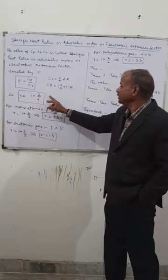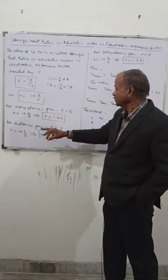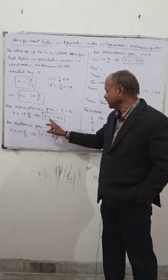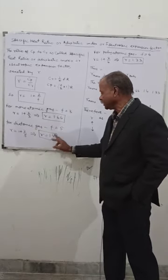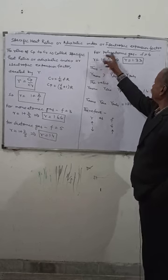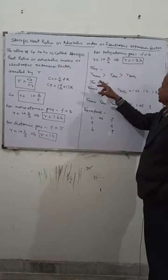Gamma equals Cp upon Cv, so gamma equals 1 plus 2 upon F. For monatomic gas, gamma equals 1.66. For diatomic gas, gamma equals 1.4. For polyatomic gas, gamma equals 1.33.